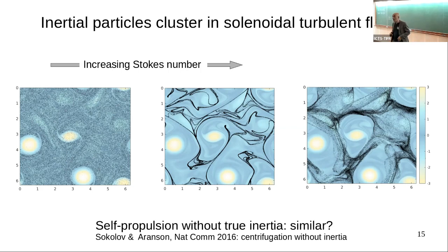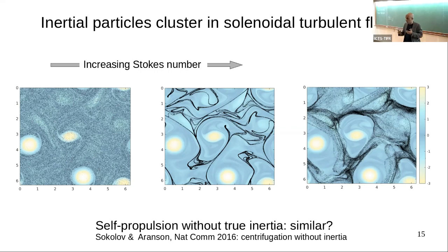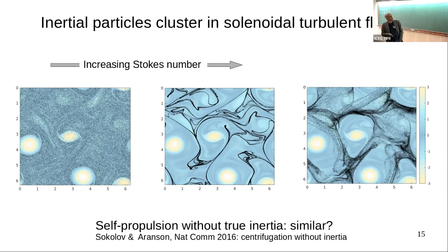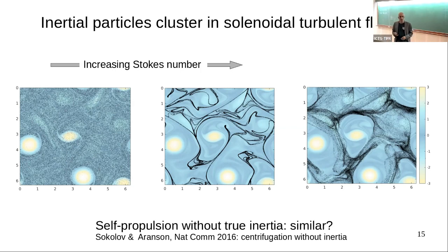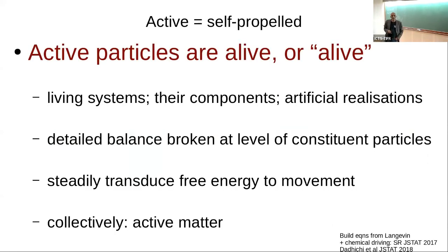The question is: if you take particles without official inertia but they're self-propelled, can analogs of inertial forces emerge in their dynamics in the presence of imposed vortical flow fields? Can things like centrifugation happen? Any particle which is a reasonably persistent swimmer can be thought of as being endowed with a little vector that can be reoriented. If there is a flow, the flow will act on that vector and possibly do things similar to what happens to particles of true inertia.